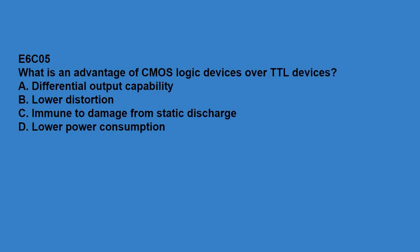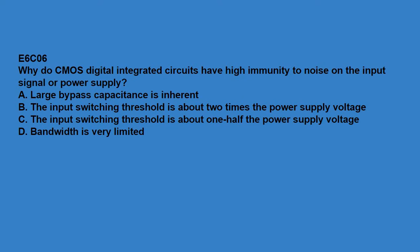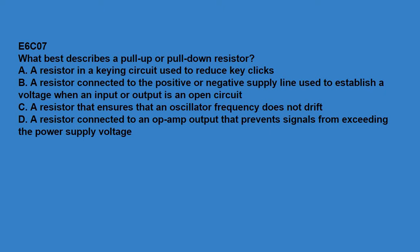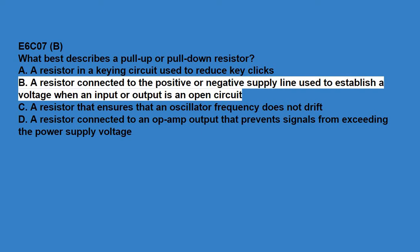E6C05: what is the advantage of CMOS logic devices over TTL devices? Lower power consumption. E6C06: why do CMOS digital integrated circuits have high immunity to noise on the input signal or power supply? The input switching threshold is about one-half the power supply voltage. E6C07: what best describes a pull-up or pull-down resistor? A resistor connected to the positive or negative supply line used to establish a voltage when an input or output is an open circuit.